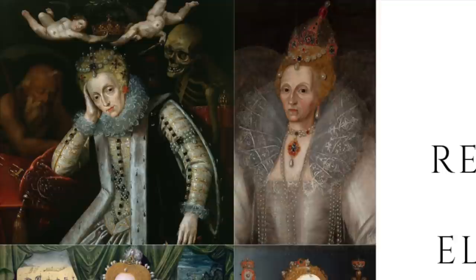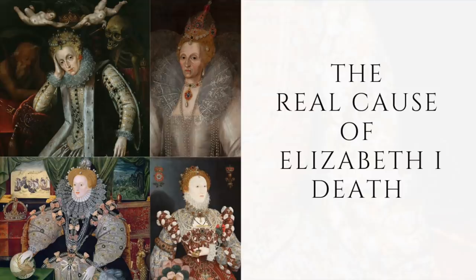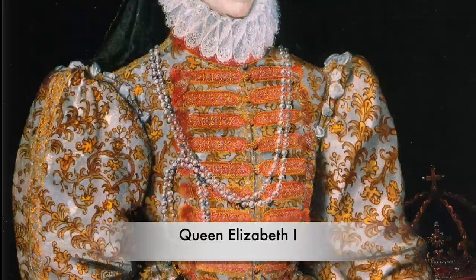Elizabeth I is known for being the queen that reigned over England for a staggering 45 years — well, almost. She was the daughter of the notorious King Henry VIII and his second wife Anne Boleyn, the queen who lost her head by French swordsmen. Elizabeth was just two years old when her mother was brutally taken away from her.